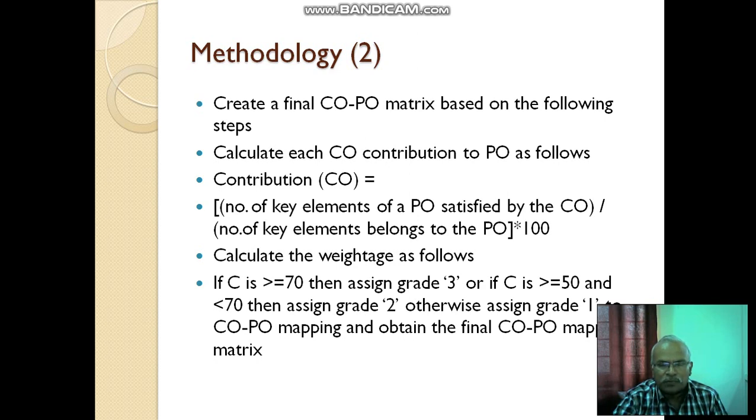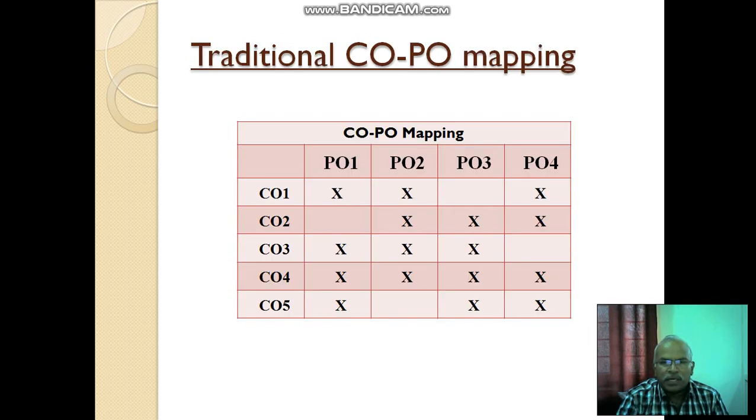Now consider the example following this methodology. Traditionally, we are having CO-PO mapping in earlier accreditation process. It is represented by X particularly. That means CO1 is mapped to PO1, to which extent it is not mentioned because X will not clearly mention about the clarity about the relationship. So, this is traditional.